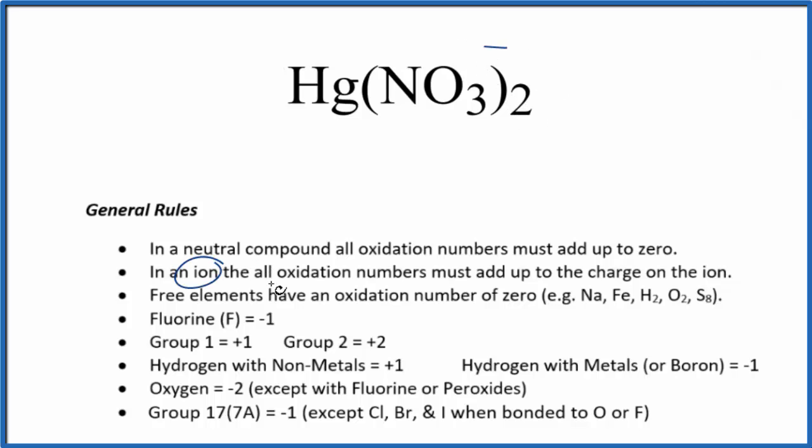When we have ions, their oxidation numbers are going to add up to the charge on the ion. So we can tell that the oxidation numbers are going to add up to minus one. Since we have two of them, two times that minus one, we'd have a minus two for the oxidation numbers.